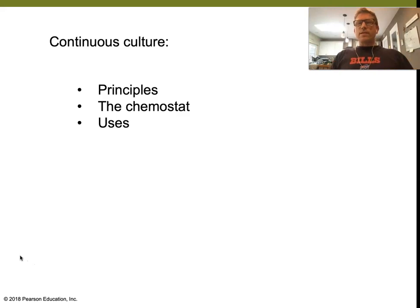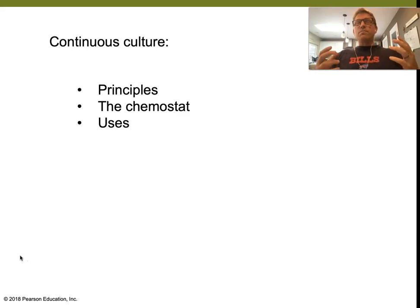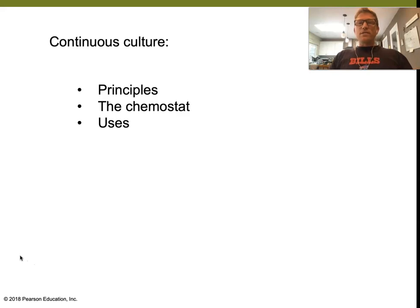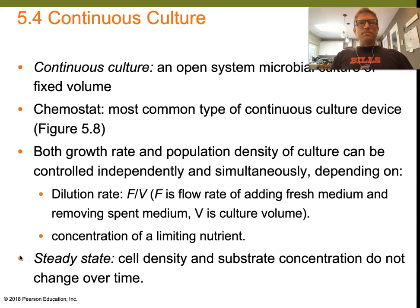We're going to talk about some basic principles of continuous culture. We're going to talk about the chemostat, which is the main tool in the laboratory that we use to grow bacteria in continuous culture. And then we'll look at some of the uses, some of the ways we might apply something like a chemostat for studying microorganisms.